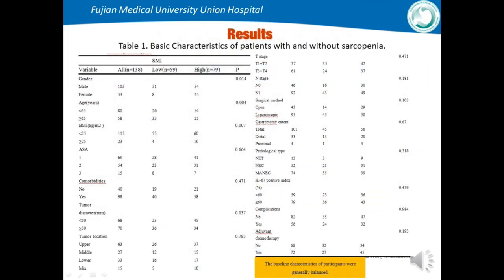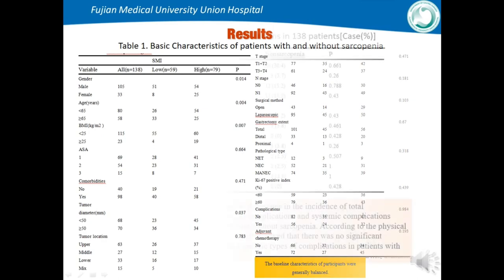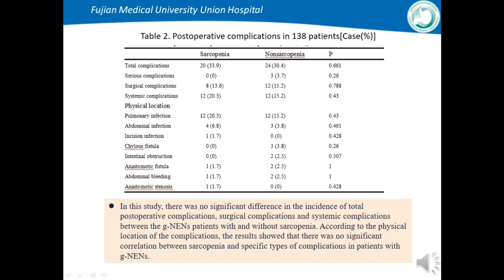Table 1 shows the basic characteristics of patients with and without sarcopenia; baseline characteristics were generally balanced. Table 2 shows postoperative complications in 138 patients. There was no significant difference in the incidence of total postoperative complications, surgical complications, or systemic complications between the sarcopenia and non-sarcopenia groups. There was no significant correlation between sarcopenia and specific types of complications in patients with GNEN.